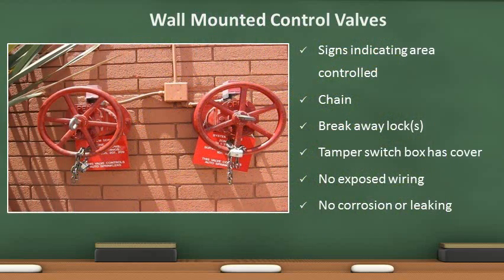These are wall-mounted control valves. They perform the same function as the control valves on the previous slides and have the same requirements. Signs indicating the buildings served shall be posted on or near the valves, and chains with breakaway locks are required. Again, there should be no corrosion or leaking, and no exposed wires.